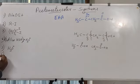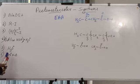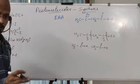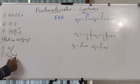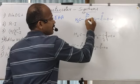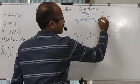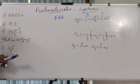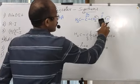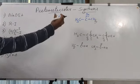A fifth option is hydrolysis with acid followed by heating. Hydrolysis generates the carboxylic acid, and since it is a beta-keto carboxylic acid, further heating causes decarboxylation, resulting in formation of a ketone.